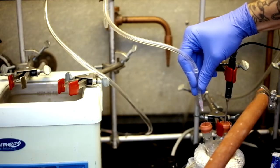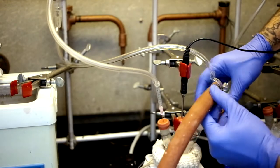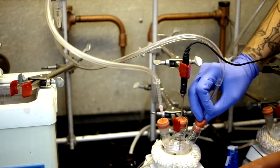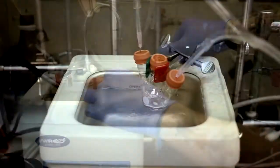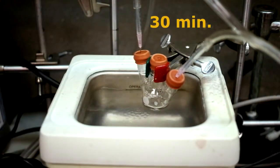After the selenium flask has been degassed for one hour, you can switch to argon and remove it from the heat. You can also remove the temperature probe and place it into the sonicator to dissolve the selenium powder. It should sonicate for about 30 minutes.